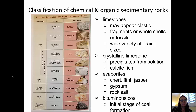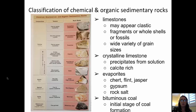We also have crystalline limestones. The crystalline limestones are calcium-rich and precipitate out of a solution. Other types of chemical sedimentary rocks include evaporites such as chert, flint, and jasper — those are silica-rich — as well as gypsum or even rock salt. And finally, we have bituminous coal, which is an initial stage of coal formation before it is metamorphosed.